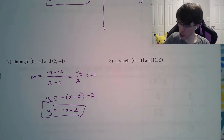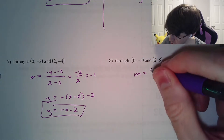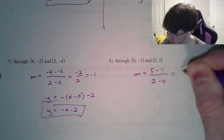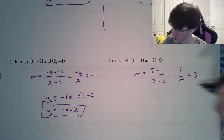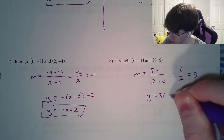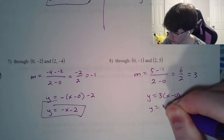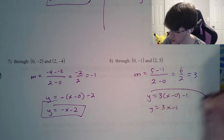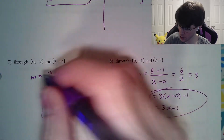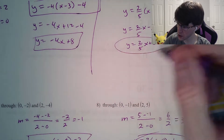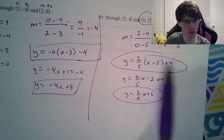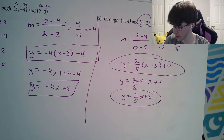Question number 8 — same exact thing. Our slope is y2 minus y1 over x2 minus x1, giving 6 divided by 2, which reduces to 3. So y equals 3 times x minus 0, minus 1, which is just y equals 3x minus 1. Don't forget, there are two answers to all these questions: there's the slope-intercept and the point-slope. The point-slope has that two-answer thing, and the slope-intercept does not.